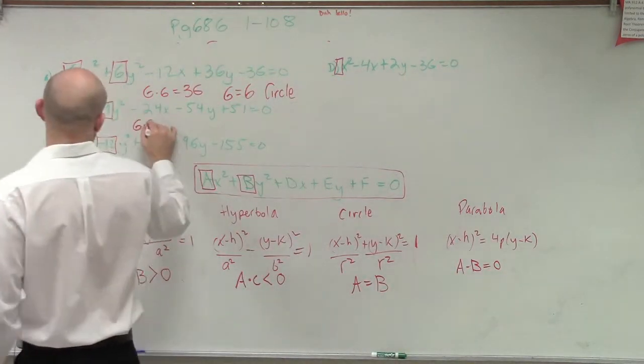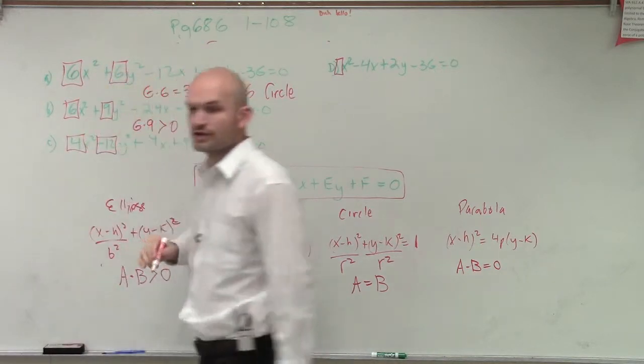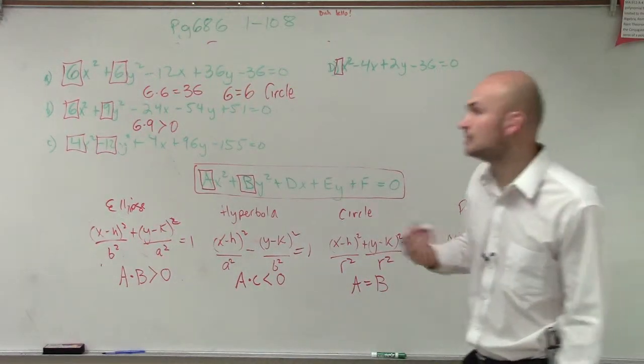Here, I do 6 times 9. 6 times 9 we know is greater than 0. So therefore, it has to be an ellipse.